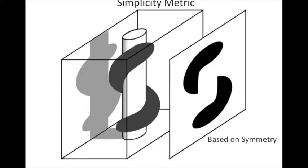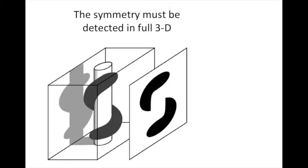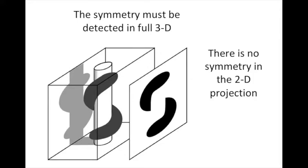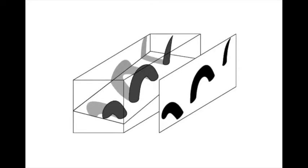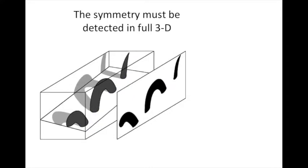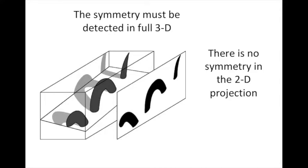The simplicity metric appears to be based on symmetry. This is the Gestalt metric of Prägnanz. But I argue that the symmetry must be detected in full three dimensions, because there is no symmetry in the two-dimensional projection. Likewise for Peter Tse's sea monster—this is the perceptual transformation from the stimulus to a three-dimensional percept, including an amodal percept of the submerged portions of the monster. Again, this symmetry must be detected in the full three-dimensional context because there is no symmetry to be detected in the two-dimensional projection.